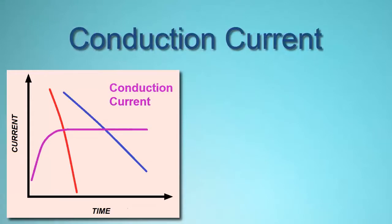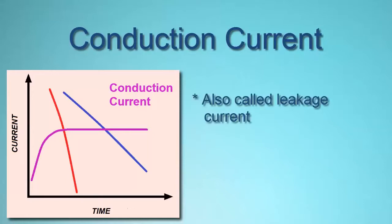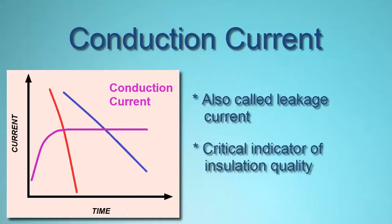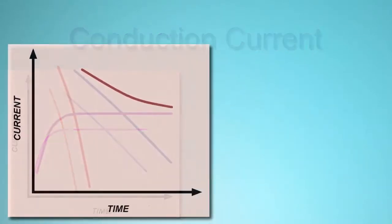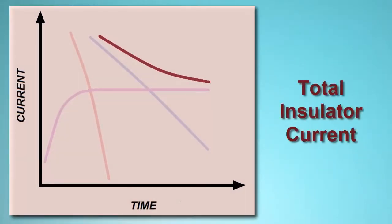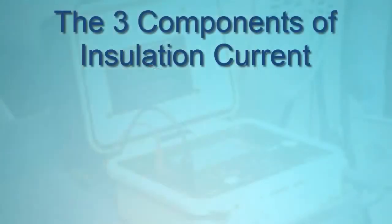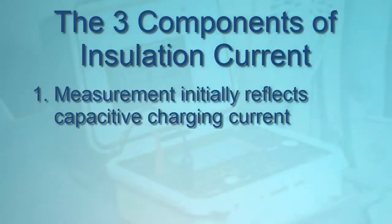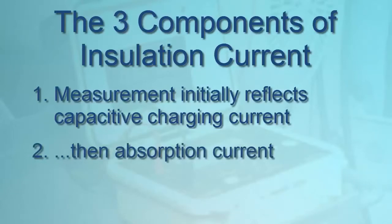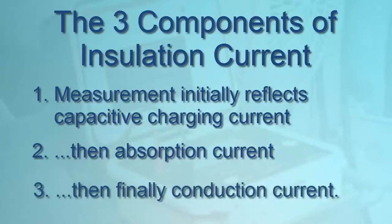Conduction current, often called leakage current, is the steady current present both through and over the insulation. This is a critical measurement, since an increase in conduction current over time is likely an indication of deteriorating or damaged insulation. Combining these three components produces a total insulation current profile similar to the illustration shown on the screen. For a typical test, the initial measurement primarily reflects capacitive charging current. After a period of time, absorption current is dominant. Beyond 1 to 10 minutes, the measurement is mainly composed of conduction current — the primary value used to calculate the quality of insulation resistance.